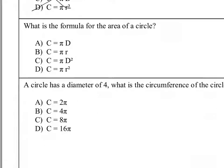What is the formula for the area of a circle? That's π times radius squared. That's something we should have memorized at this point, and we need to use these formulas over and over again.